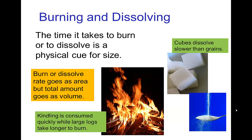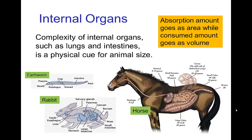One example of the relationship between area and volume that affects timing is that the time it takes for something to dissolve or to burn depends on size. A grain of sugar dissolves very quickly, while a sugar cube dissolves much more slowly. Similarly, a tiny piece of wood burns very quickly, while a large log burns very slowly. So that timing gives a sense of scale.